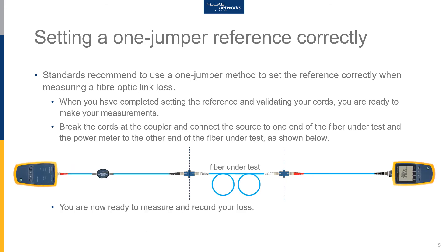When you have finished setting your reference and verifying your test reference cords, you are ready to make your loss measurements. Break the cords at the coupler and connect the source to one end of the fiber under test — the power meter, of course, is connected to the other end. You can see this arrangement in the diagram: the source to the left, the power meter to the right. Once connected, you are ready to measure and record your loss results.